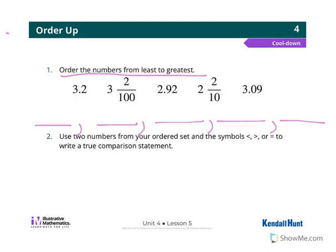Alright, so when I look at these decimals I'm going to start with the greatest. I'm going to look at my whole numbers. I see a 3, a 3, a 2, a 2, a 3. So I'm going to ignore the ones that have a 2 to begin with and look at the ones that have a 3.